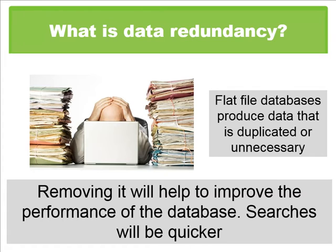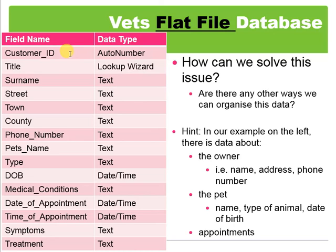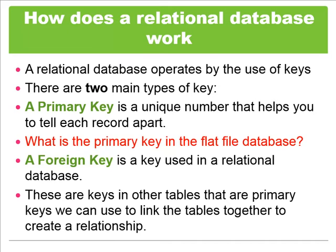Let's have a look at how the relational database works. It works by the use of keys, and there are two types of key. We have a primary key — we've seen this in a previous video — which is a unique number that helps you tell each record apart. In the flat file database, the primary key would be the customer ID. A foreign key is a key used in a relational database. It is a key in another table that is a primary key in that table, and we use it to link the tables together to create the relationship.